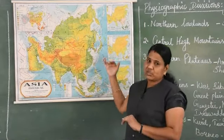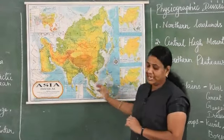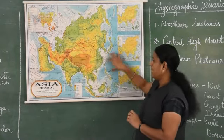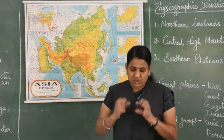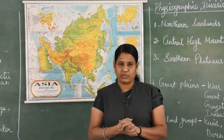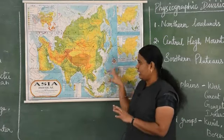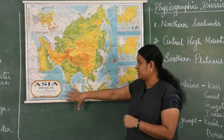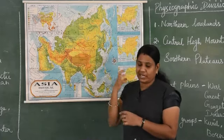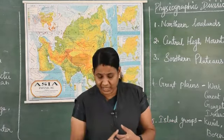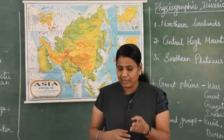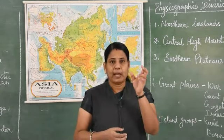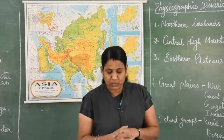Next we are going to see the south, south-east and eastern part of Asia. These areas are strongly influenced by the monsoon winds. The monsoon winds bring heavy rainfall. Places like India, Bangladesh, Indochina, Philippines and southern China get heavy rainfall measuring 1500 millimetres to 2500 millimetres.